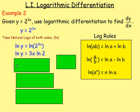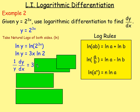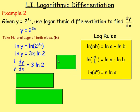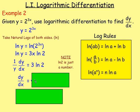Differentiating: 3 is a number, ln(2) is a number, so differentiating ln(y) gives 1/y · dy/dx. The x disappears, leaving 3·ln(2) on the right. Remember, ln(2) is just a number — differentiate 3x·ln(2) the way you would 7x, and you're left with just the number. So 1/y · dy/dx = 3·ln(2). Multiply both sides by y: dy/dx = y · 3·ln(2).